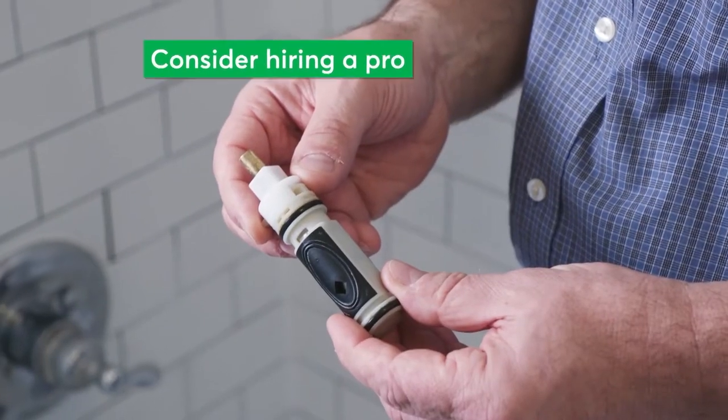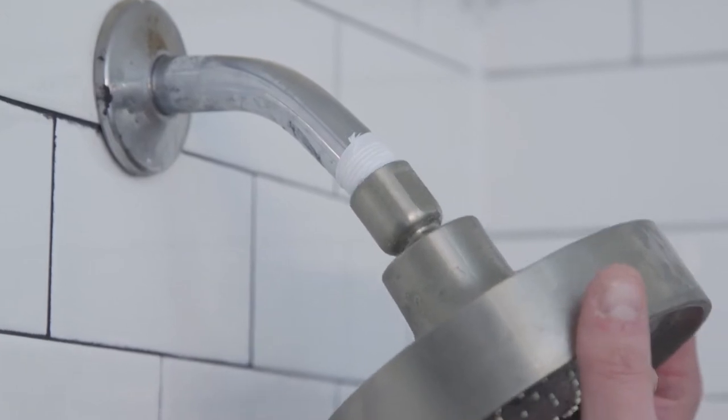If your shower head is leaking when the shower is off, you may need to replace the cartridge or a washer. But if it's leaking when the shower is on through the sides, that's an easy fix. You put some plumber's tape around the pipe, tighten it up, and you should be good to go.